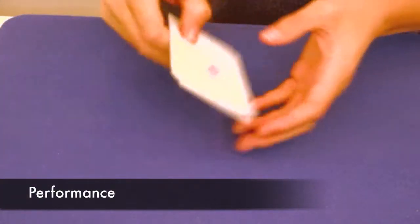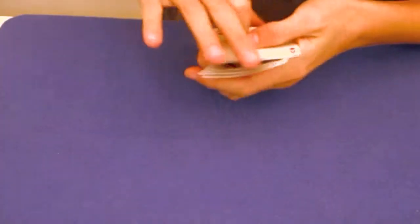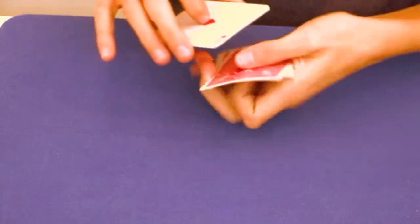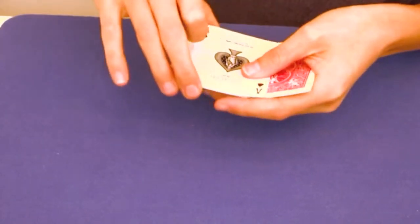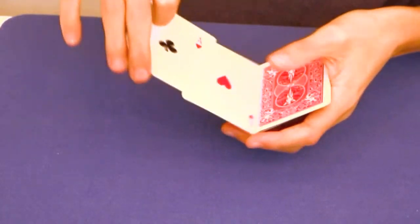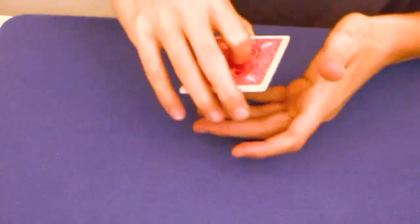As you can see, I've got the 4 aces and 4 queens. What I'm going to do is I'm going to take the aces. There's the ace of diamonds, ace of spades, ace of hearts, and the ace of clubs.